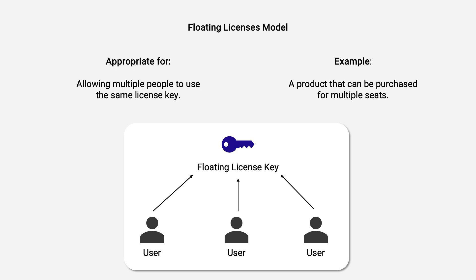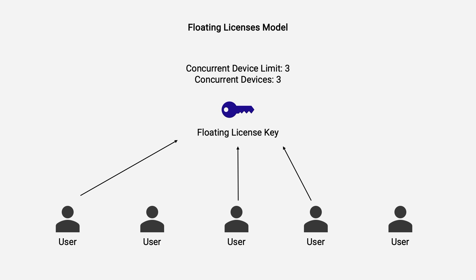Floating and node-locked licenses are great if you're selling a product that allows for multiple seats. Let's say that a customer buys your application and wants three employees to be able to run it. You can then set up a pricing model that allows for three employees to use the same license key — in this case, a floating license key. You would tell the software licensing system to only allow three concurrent users to run the application with the same floating license key. If a fourth one tries to enter, they will be denied because this customer only paid for three seats. If they want more, they have to pay more.